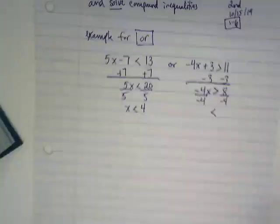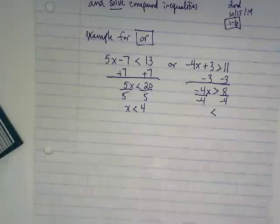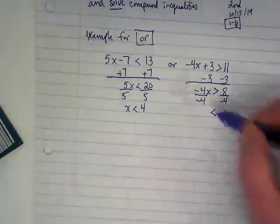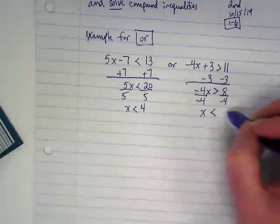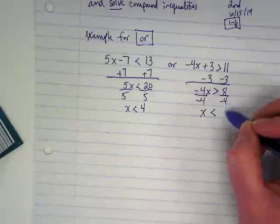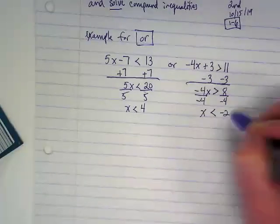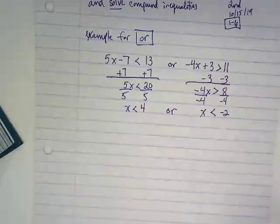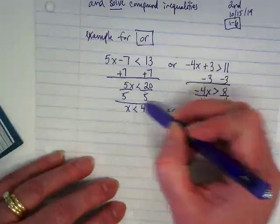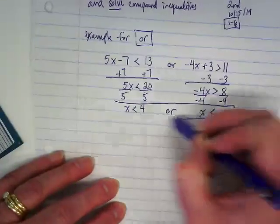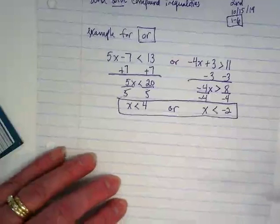I always do it first so I don't forget. As soon as I write that I'm dividing or multiplying by a negative, flip the symbol before you do the rest of the math. That leaves us with x. 8 divided by negative 4 gives us negative 2. And this is an or. So when you finish, I like to write the or in between and show that they go together. Those are my solutions.